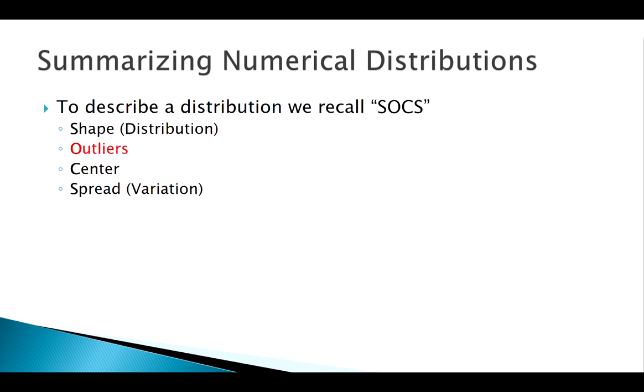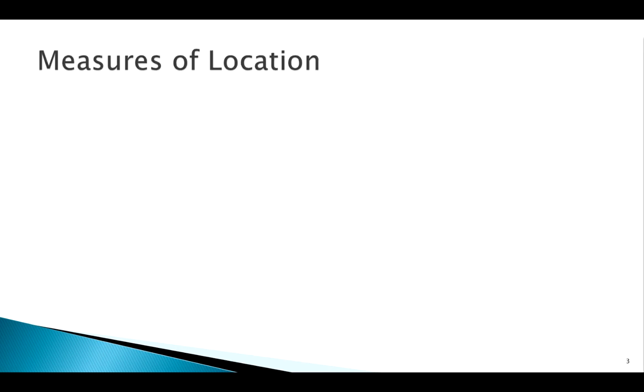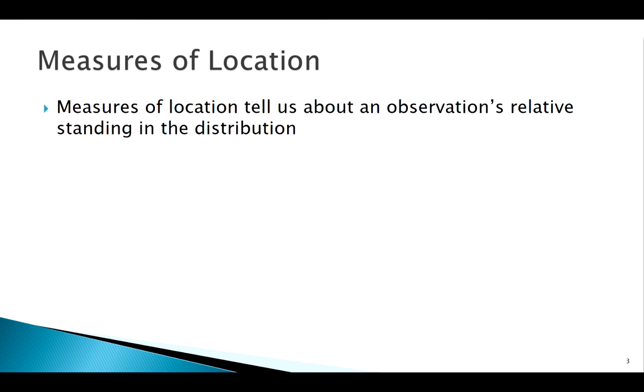We talked about shape previously. We also saw that sometimes we can see outliers visually, but we can't always tell yes or no formally is this an outlier or not. So we're going to look at today some ways of numerically identifying outliers. And that's where measures of location come in.